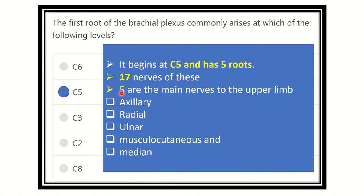Among them, 5 important nerves supply the arm, forearm, and hand area. They are: axillary, radial, ulnar, musculocutaneous, and median nerve. This is in short about the brachial plexus — it will help you a lot in exams. Thank you.